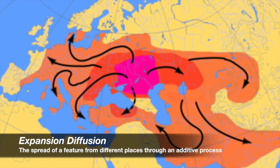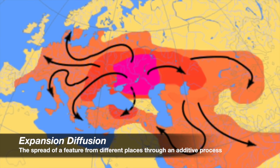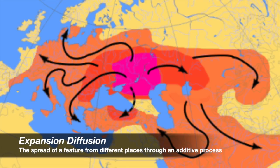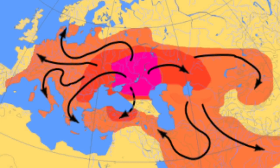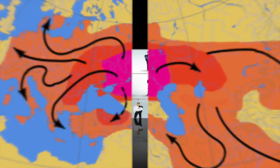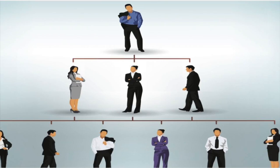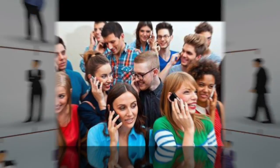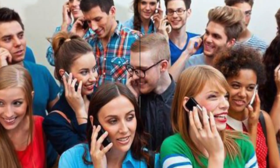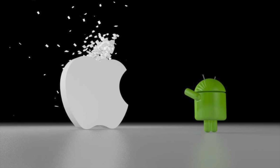Expansion Diffusion, on the other hand, is the spread of a feature from different places through an additive process. Three examples of this subdivision are Hierarchical, Contagious, and Stimulus Diffusion.